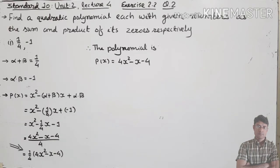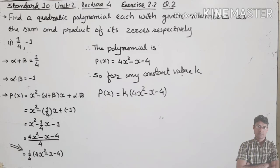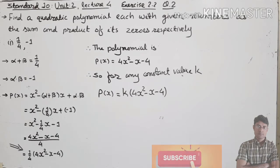When there is no common factor, the common factor is 1. But here the common factor is 1/4, so you can write 1/4 as the common factor. For any constant value — not just 1/4 but any value — you can write p(x) equals k in bracket (4x squared minus x minus 4). This is one method; this is not in the book.